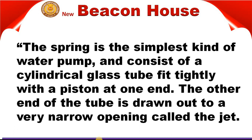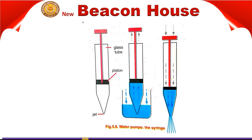To fill the syringe, the jet is held in the liquid and the piston is pulled up. The liquid is pulled up into the syringe because the atmospheric pressure, being greater than the air pressure inside the syringe, presses down on the liquid surface and forces it into the syringe.